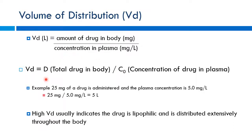As a rule of thumb: the higher the VD, the more lipophilic the drug and the more extensively it distributes into tissues. Low VD drugs tend to be more hydrophilic — they stay within the systemic circulation. We can compare different drugs by their VD values to understand their distribution behavior, as I'll show in more specific examples shortly.